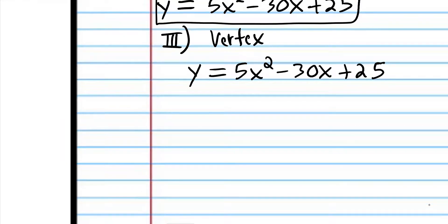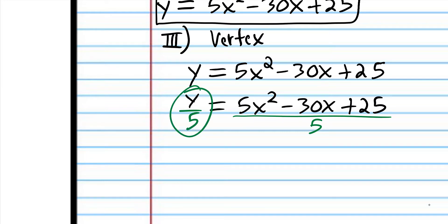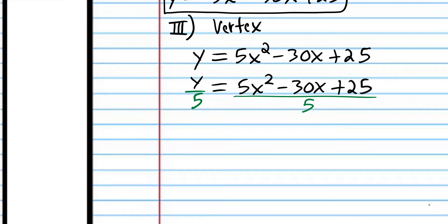We're going to do something kind of unusual — normally we'd have a 0 on this side, but now we have y. To get rid of the 5, we have to divide both sides by 5. On the left side, we write y over 5. Dividing a polynomial by a monomial means dividing each term: 5x squared divided by 5 is x squared, negative 30x divided by 5 is negative 6x, and 25 divided by 5 is 5.